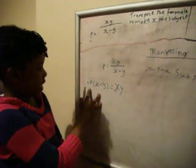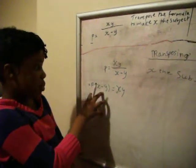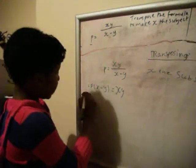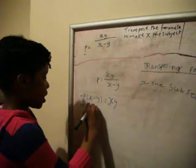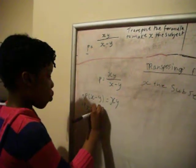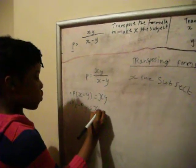Well this basically means p times x minus y, and then we expand the bracket. So it's px minus py equals xy.